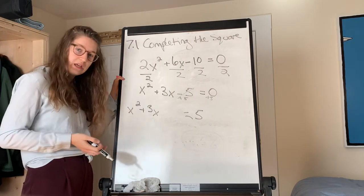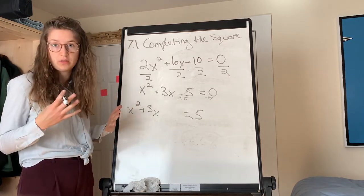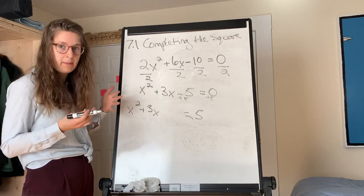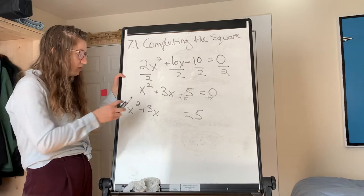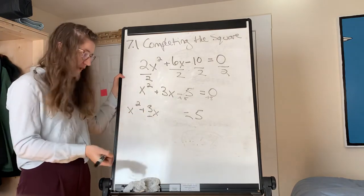So remember what we're doing here is creating artificially a perfect square trinomial, so we can take the square root of it really easily. To do that, we're going to take this b term, divide it by 2, and then square it.